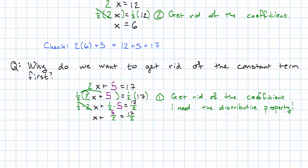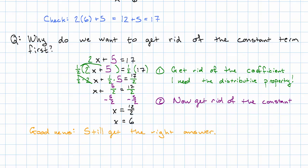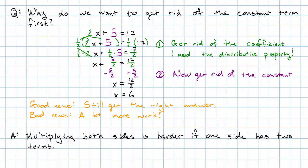But I can still get rid of the constant now. Of course, now I have to subtract 5 halves from both sides, because that's the constant term that I now see. And I'm left with x equals 17 halves minus 5 halves is 12 halves. So I still get x equals 6. So the good news is that's the same answer. It's still right. The bad news is that was a lot more work. So the answer to why do we get rid of the constant first is that multiplying both sides is harder if one side has two terms. So we choose to get rid of the constant first, because that's the easiest way to do the problem.